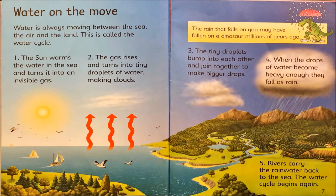Water on the move. Water is always moving between the sea, the air, and the land. This is called the water cycle. First, the sun warms the water in the sea and turns it into an invisible gas. Two, the gas rises and turns into tiny droplets of water making clouds. Three, the tiny droplets bump into each other and join together to make bigger drops. When the drops of water become heavy enough, they fall as rain. Rivers carry the rainwater back to the sea, and the water cycle begins again. The rain that falls on you may have fallen on a dinosaur millions of years ago! What is this section teaching us all about? The water cycle.